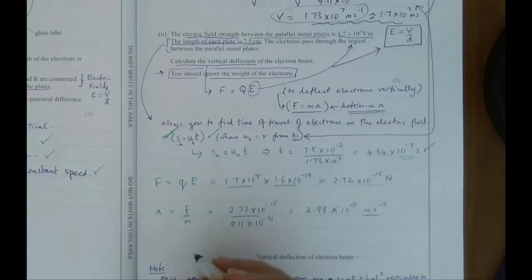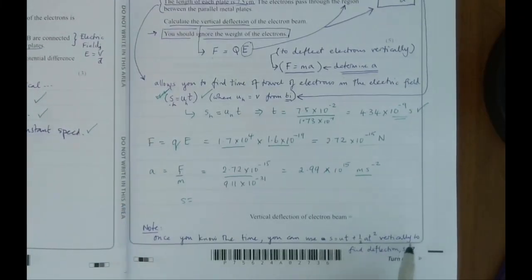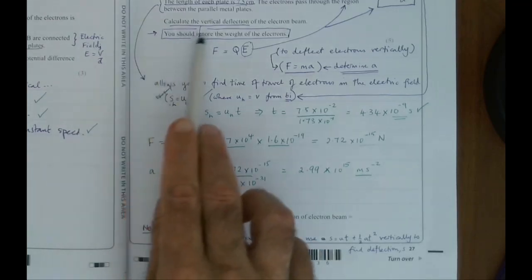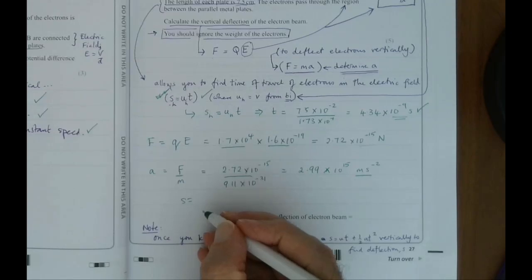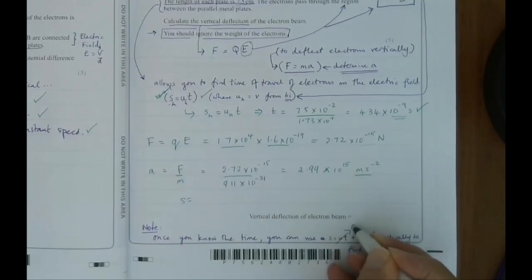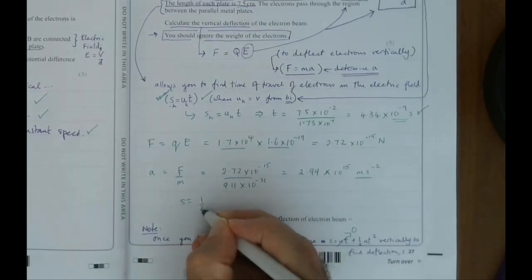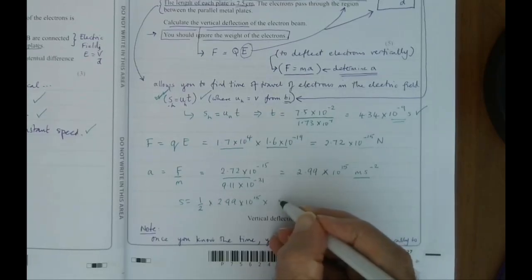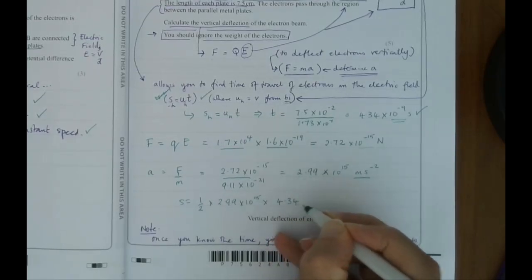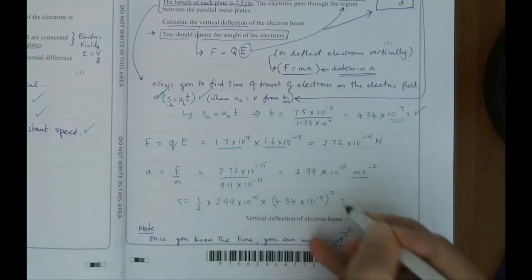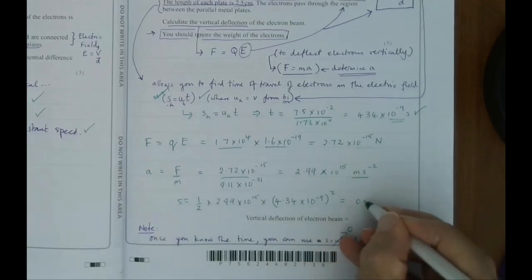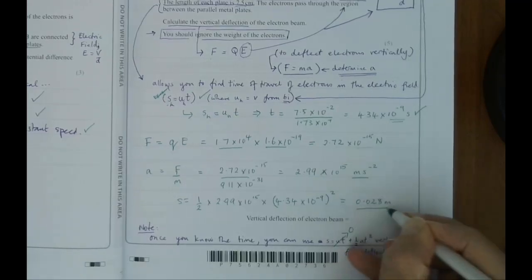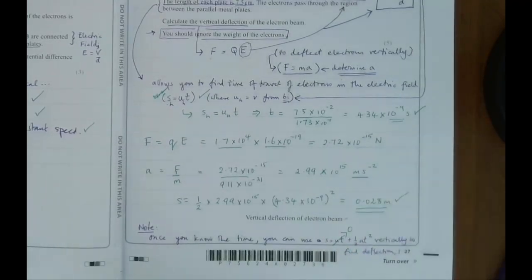Using s = ut + ½at² vertically: the initial vertical speed u is zero, so s = ½ × 2.99 × 10¹⁵ × t². Substituting the time calculated earlier (in nanoseconds, squared), gives a vertical deflection of 0.028 m, which is 2.8 cm. You can leave your answer in metres — you don't need to convert to centimetres.